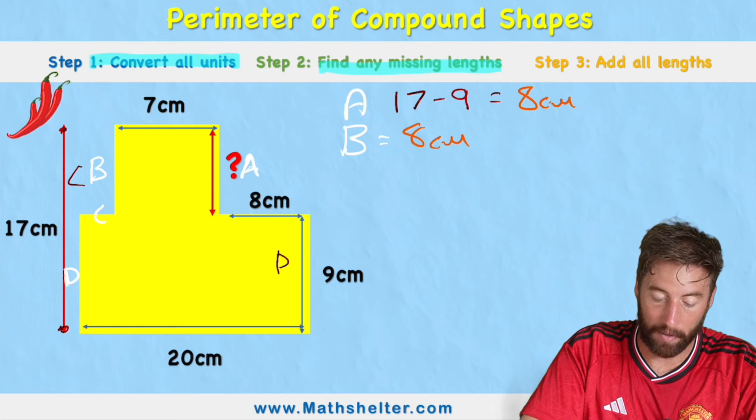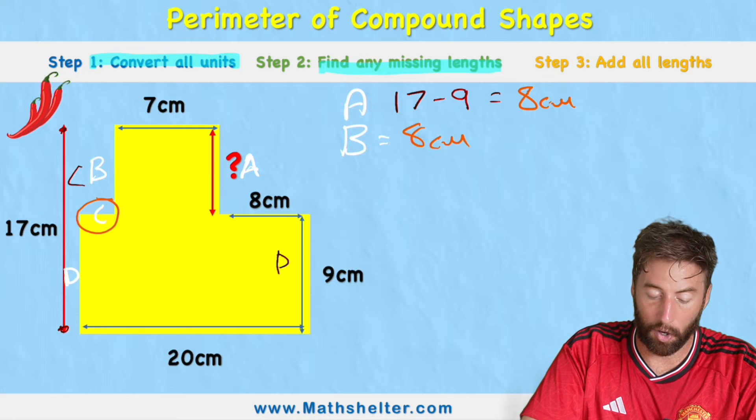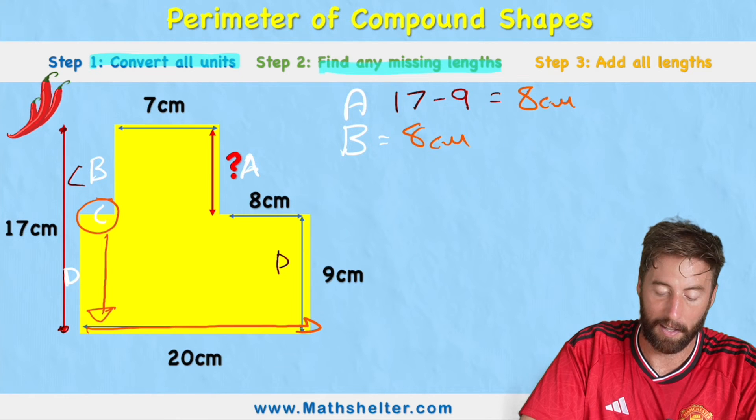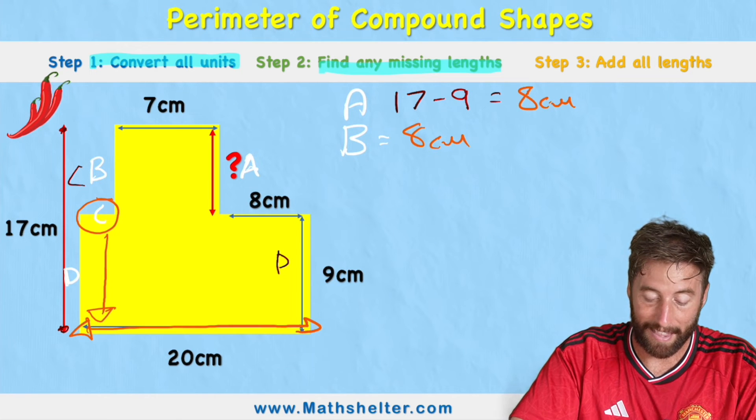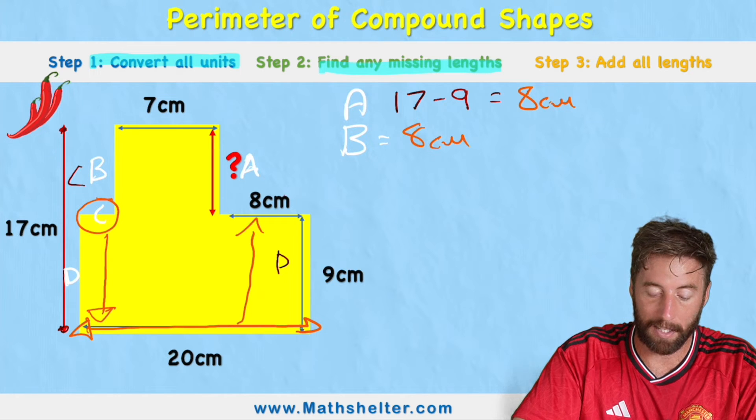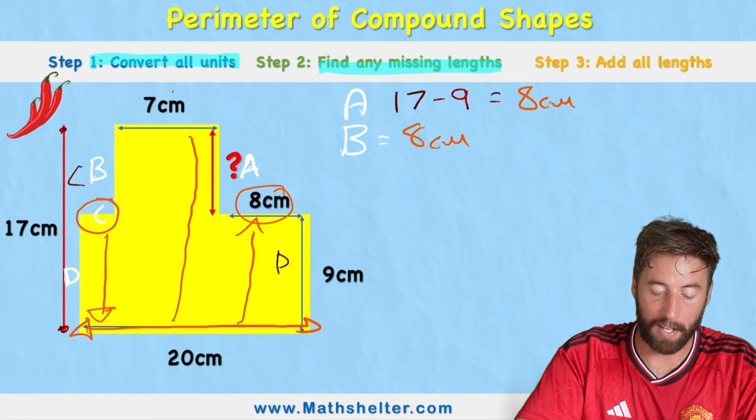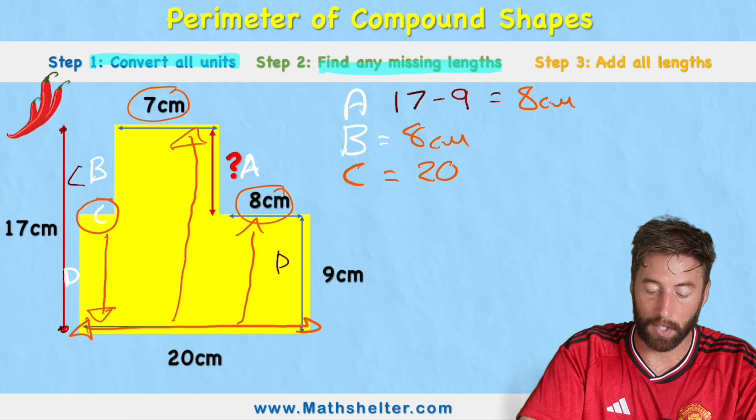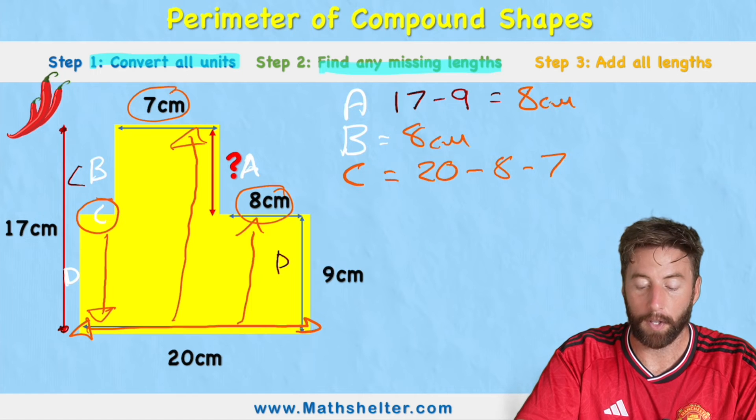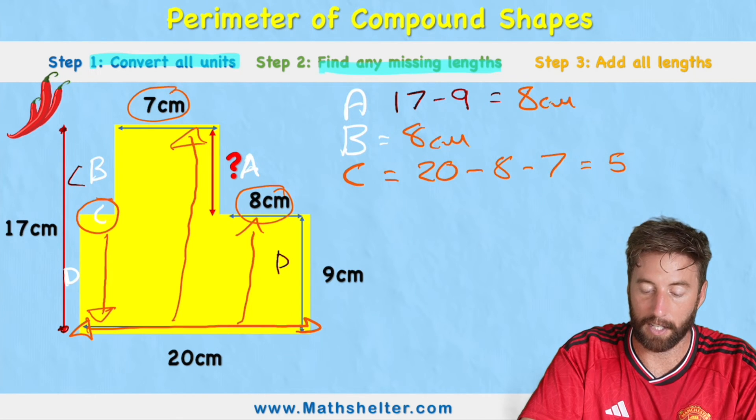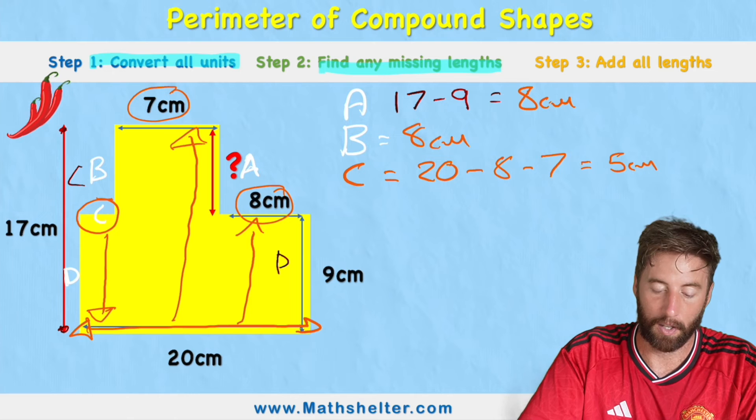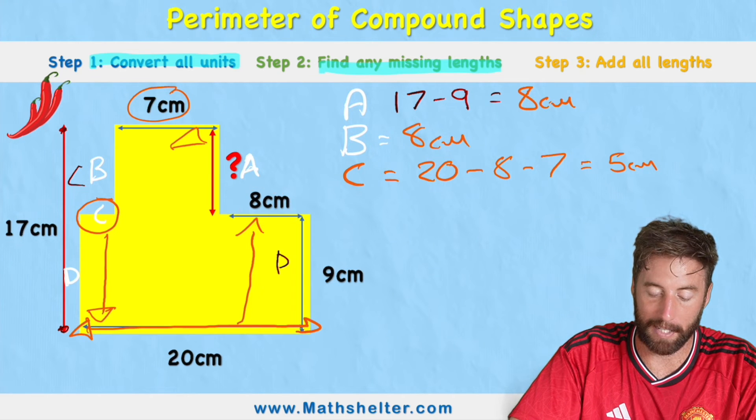Now we have this really tricky little one, this C just here. Well, let's look opposite and we can see the opposite length is 20. We have all of this length just here as 20. So if we look opposite that length, I can see I have part of it as 8 centimeters, but we also have another part here of 7 centimeters. So what I need to do for C is get my 20 and I'm going to subtract 8 and then I'm going to subtract a 7. So 20 subtract 8 would be 12, subtract another 7 equals 5 centimeters. So C, even though it looks super small, is actually 5 centimeters. All we're doing is we're looking opposite to see those missing lengths.